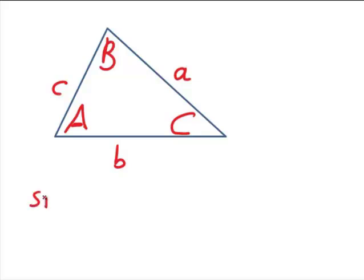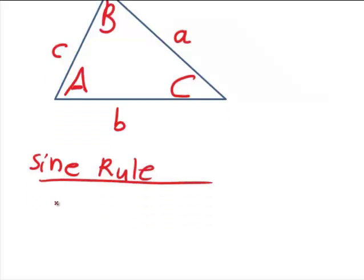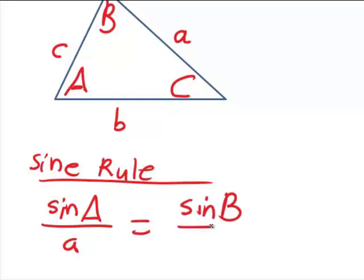The first rule that's very helpful quite often is what is called the sine rule. And this basically says that the sine of angle A divided by the length a of the side opposite that angle, that is equal to sine of angle B divided by b, which is equal to sine of angle C divided by the length c.